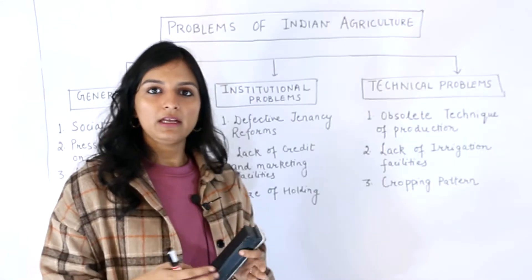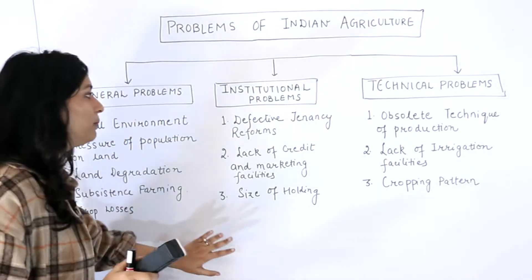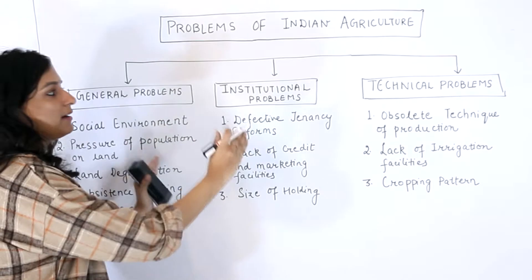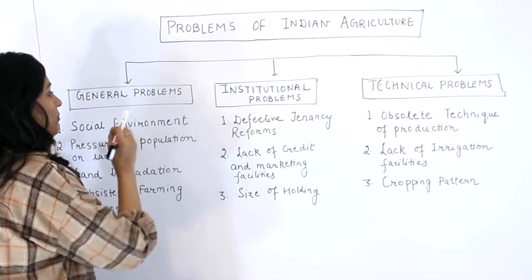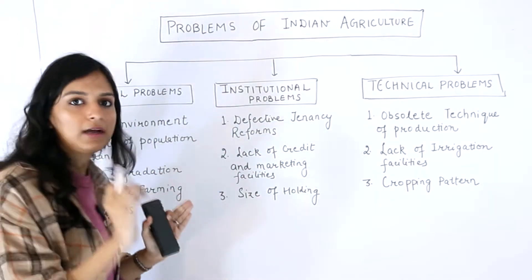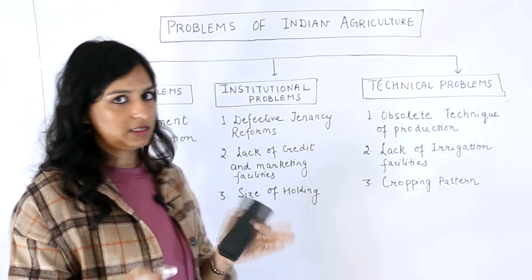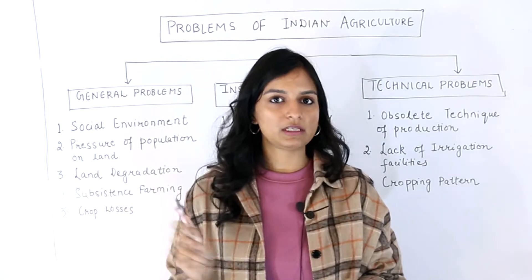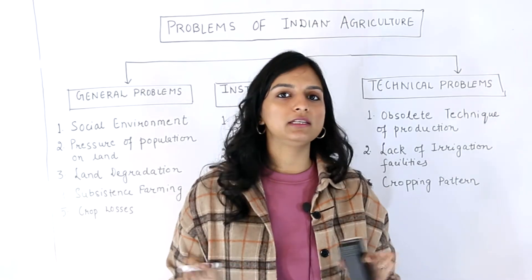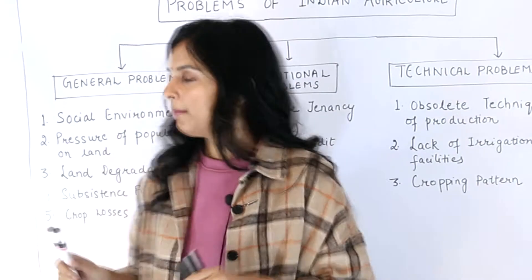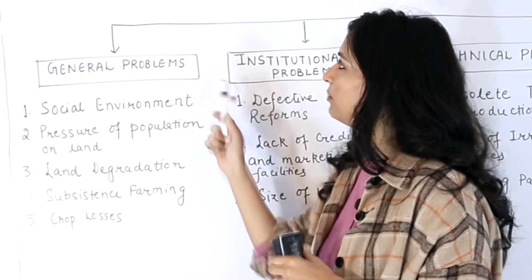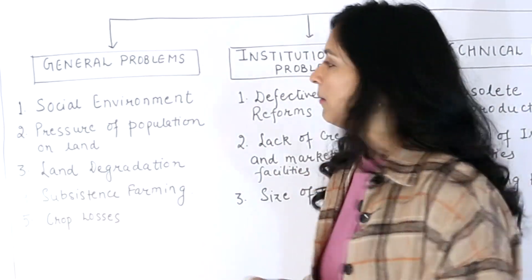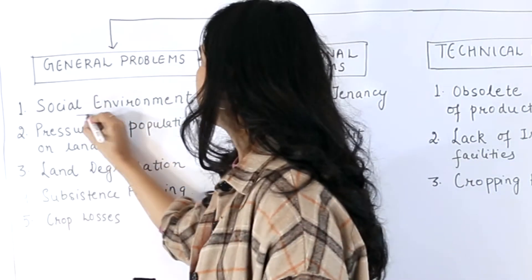I am trying to explain this in a broad way — when we categorize problems, what is the meaning of each problem? If you understand this much, then when you open the book and read the points, you will understand everything very easily. So let's talk about our first set of general problems. The first one is social environment.